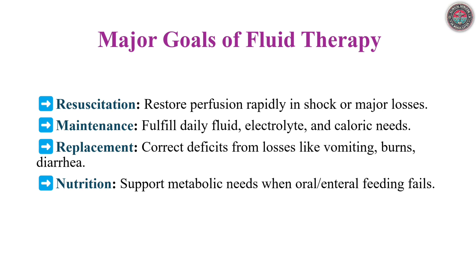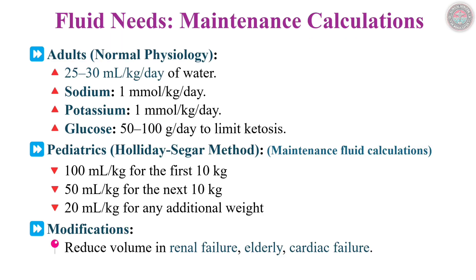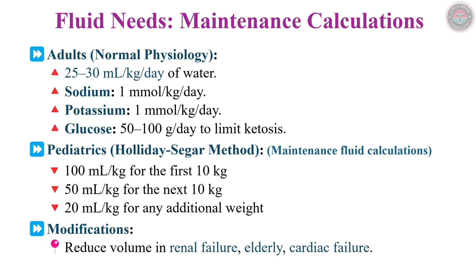Daily maintenance fluids for adults average 25 to 30 ml per kilogram. Pediatric calculations follow the Holliday-Segar formula: 100 ml per kilogram for the first 10 kilograms, 50 ml per kilogram for the next 10 kilograms, and 20 ml per kilogram thereafter. Adjustments are mandatory in renal failure, heart disease, or geriatric patients to prevent fluid overload.